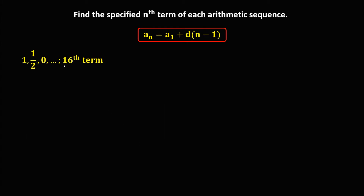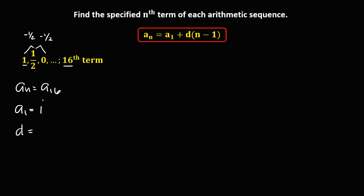Then for this given, we're looking for the 16th term, so a sub n is equal to a sub 16. Then a sub 1, the first term, is positive 1. Then d, the common difference — from 1 to 1/2 is minus 1/2, and from 1/2 to 0 is also minus 1/2 — so the common difference is negative 1/2.